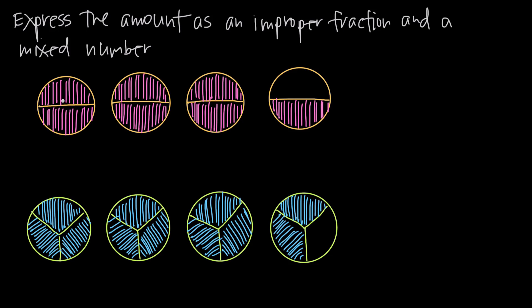If I look at this and pretend that these are four pies — one, two, three, four pies — and I want to say how much pie do I have: half of this fourth pie has already been eaten. How much pie do I have left? Logically, I can just count how much I have left. I can say I have one, two, three whole pies, and I have half of this pie remaining. So I have three and a half pies left. But how do I express that mathematically?